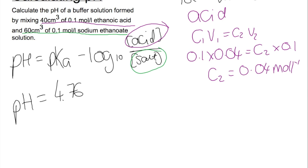We do the same thing for the salt. So we have a concentration of 0.1 and we have 60 cm³. We're trying to work out the new concentration and the new volume of 0.1, which means that the concentration of the salt in the 100 cm³ will be 0.06 mol per litre.